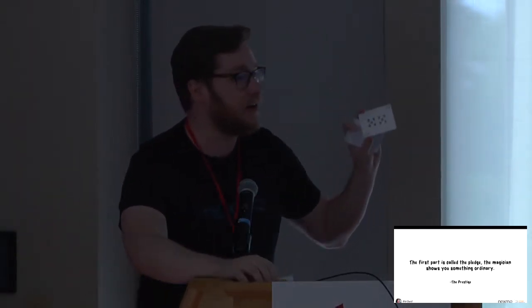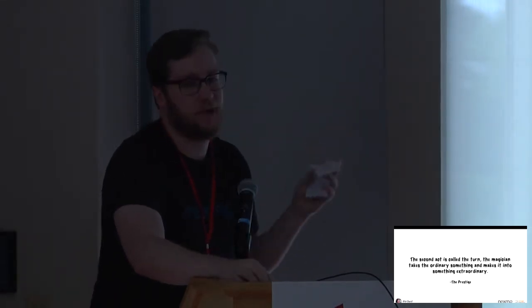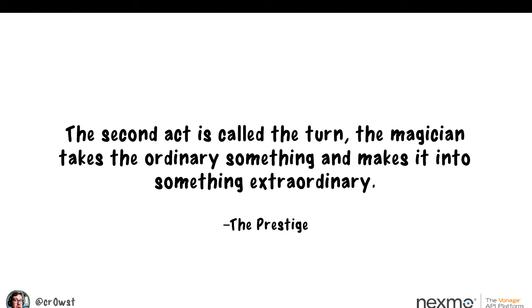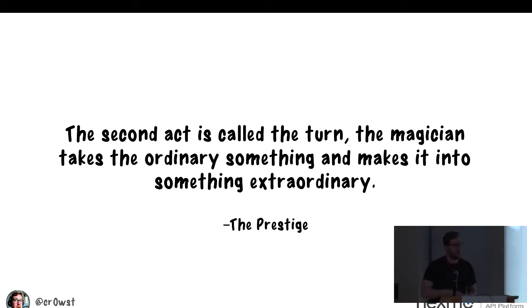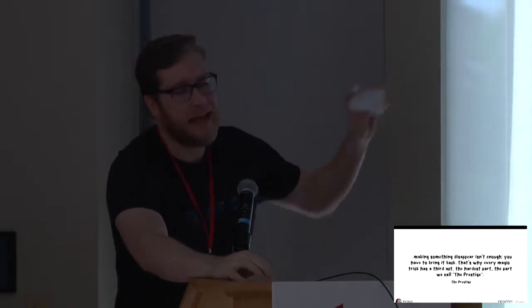In the movie The Prestige, they say every magic trick has three parts. First, they show you something ordinary — maybe hand you the deck and say 'this is an ordinary deck.' You pick a card — say the ten of clubs — it's an ordinary card. Then they do something miraculous: take the card, put it back in the deck, do some fancy shuffles, cut the deck. At the end, they tap the deck, flip the card over, and there it is — that's the prestige.